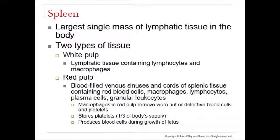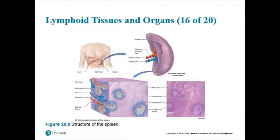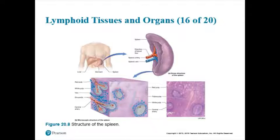Looking at figure 20.8, the spleen is in your left upper quadrant — more specifically your left hypochondriac region. In the microscopic image, those small dark purplish-blue oval pockets are clusters of lymphocytes, showing where there's lymphatic tissue — that's the white pulp fighting infections. Everything else, the lighter pinkish-reddish areas with blood vessels, is the red pulp. So the spleen has lots of red pulp with pockets of white pulp.